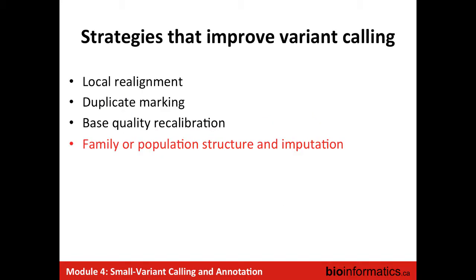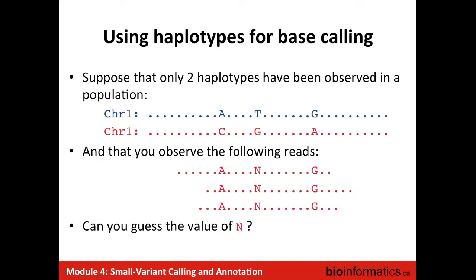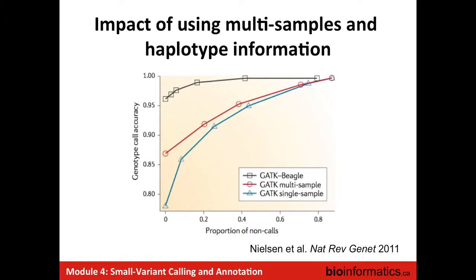Another improvement is using family or population structure information, which is correlated with multi-sample calling. The idea is to use haplotypes: if you know that in the population you have two haplotypes — say ATG and ACGA — and you are sequencing a base you can't trust because of bad quality, based on haplotype information you can probably guess the correct value.